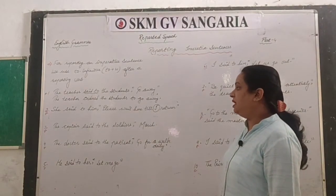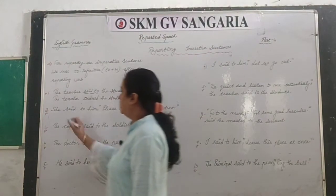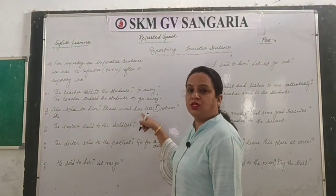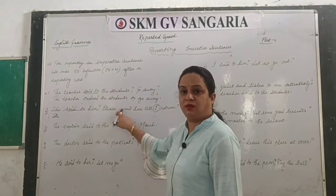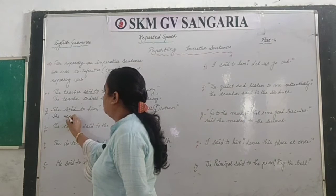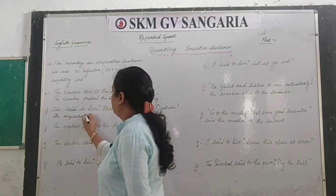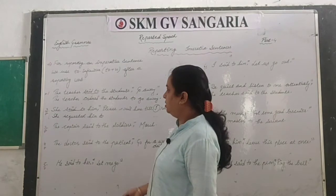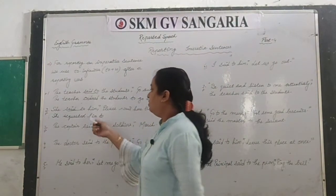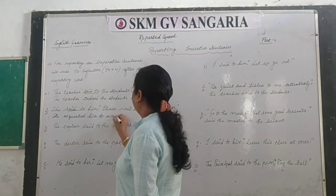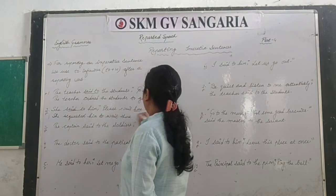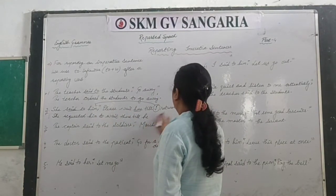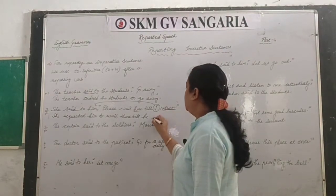Next: 'She said to him, please wait here till I return.' The word 'please' shows this is a request, so 'said to' changes to 'requested'. She requested him to wait there till she returned. Since 'requested' already implies politeness, 'please' is dropped. The pronoun 'here' changes to 'there' and 'I return' changes to 'she returned'.